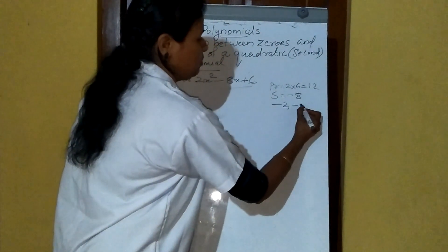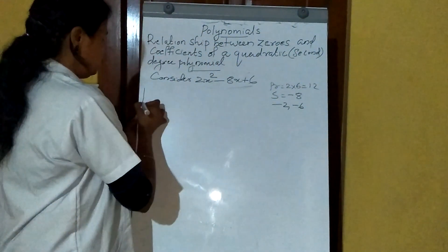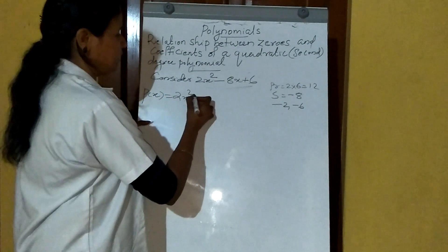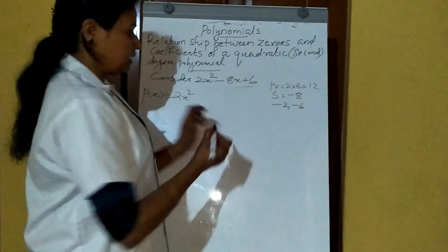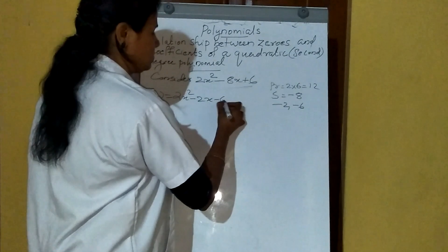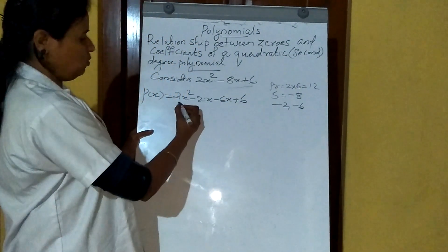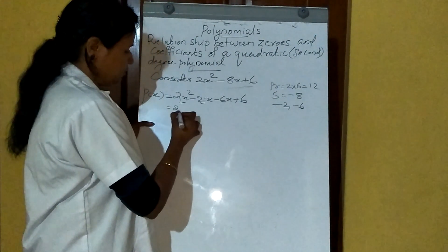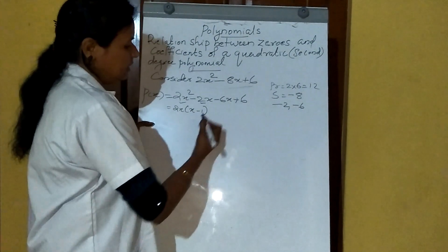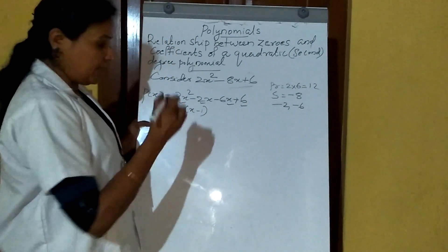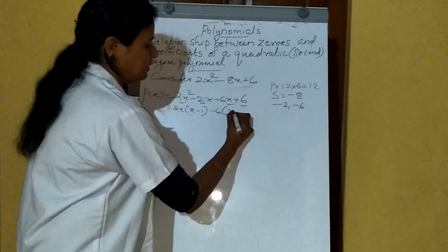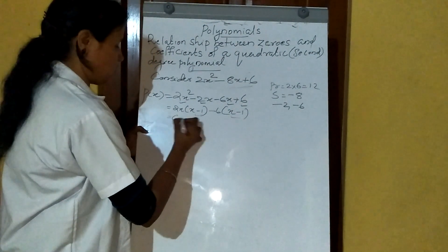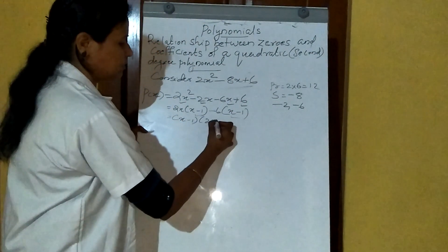Such numbers are minus 2 and minus 6. Then the given polynomial p(x) = 2x² minus 8x plus 6, where 8x can be written as minus 2x minus 6x plus 6. Now taking the first and second terms, 2x is common — take it outside: 2x into (x minus 1). Again for the third and fourth terms, minus 6 outside gives (x minus 1). Taking (x minus 1) common: (x minus 1) into (2x minus 6).